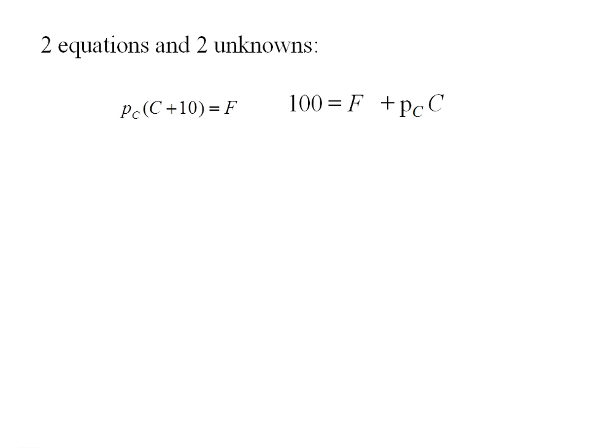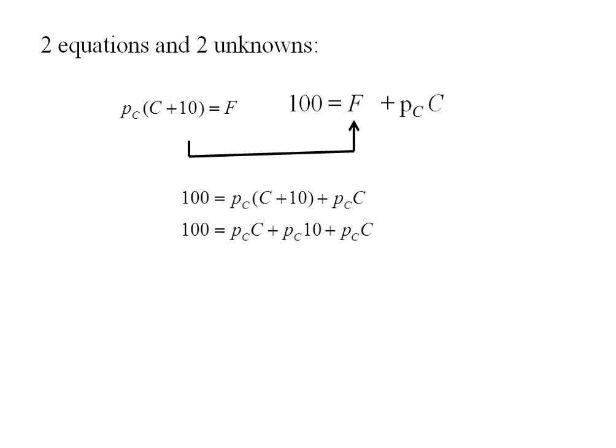Now I have two equations and two unknowns. I can substitute in: 100 equals PC times C plus 10 plus PC times C. Distributing that first PC gives 100 equals PC times C plus PC times 10 plus PC times C. Grouping terms: 100 equals 2 PC times C plus 10 PC.